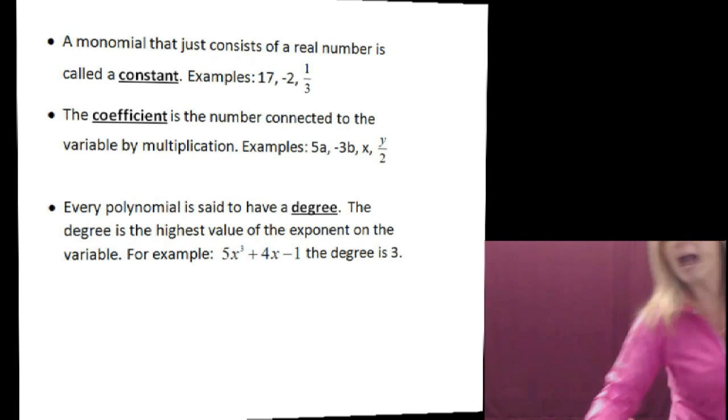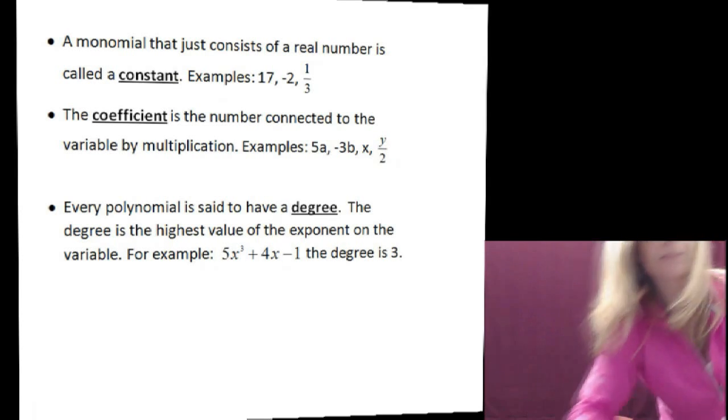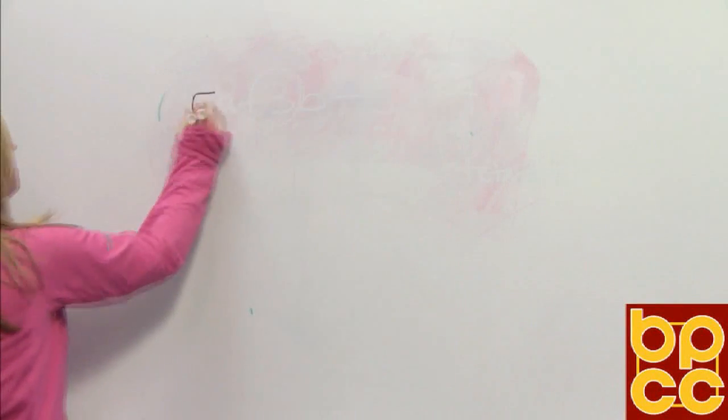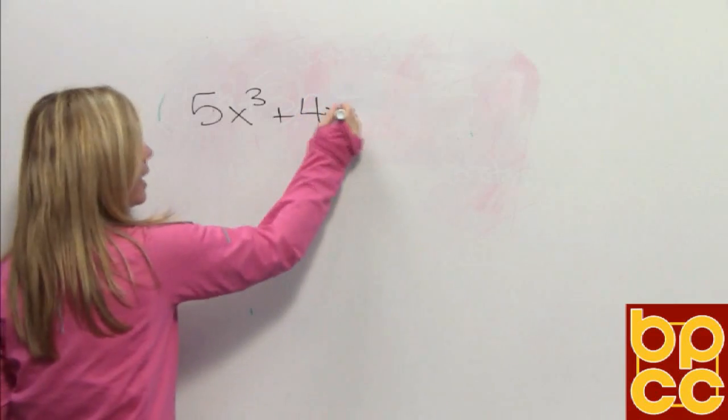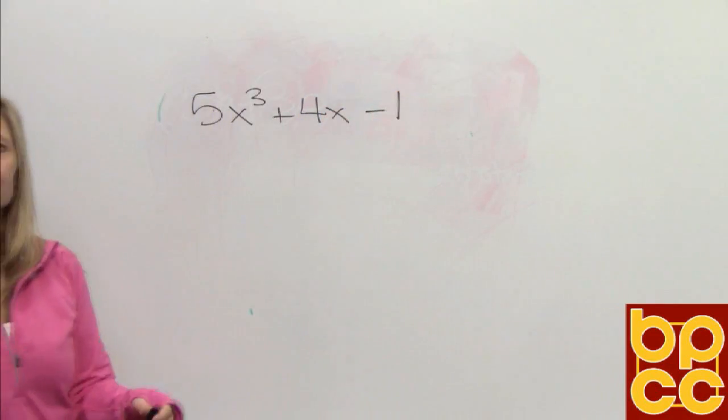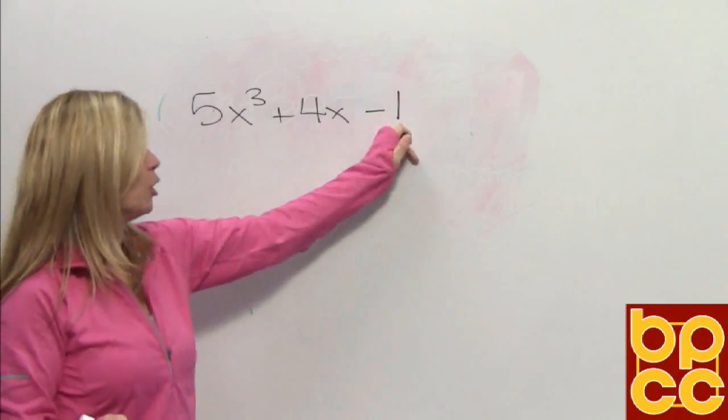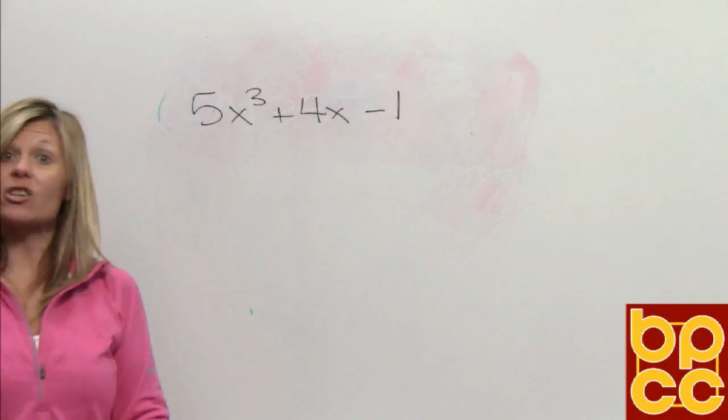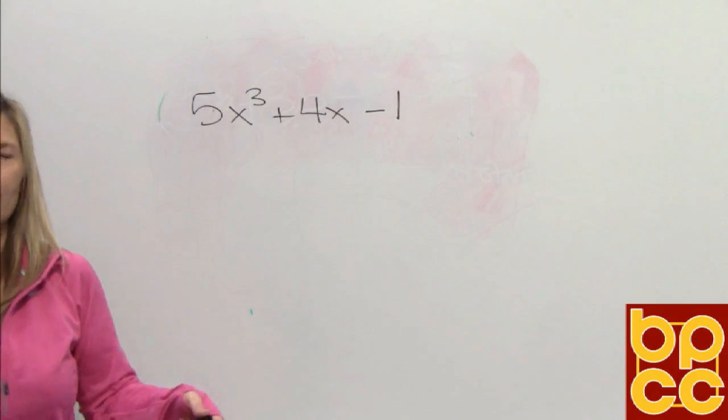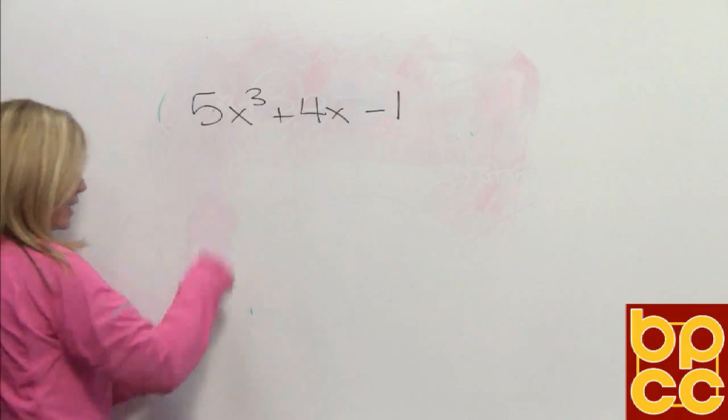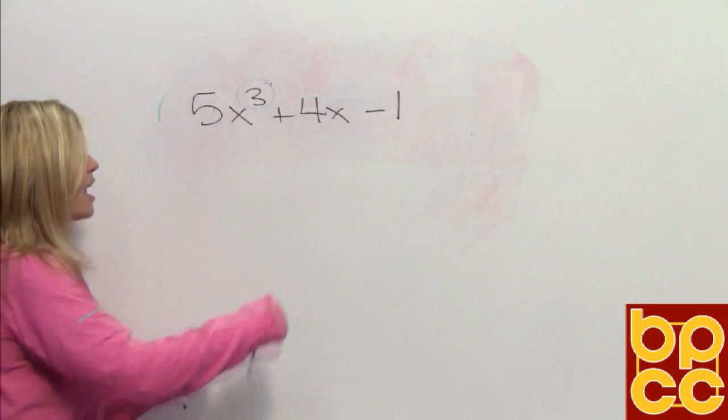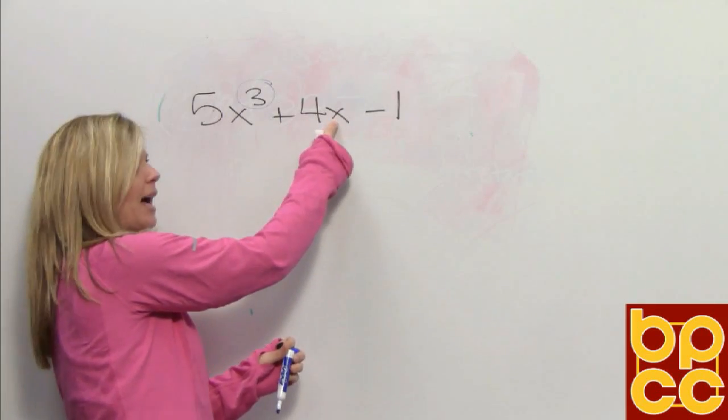We're going to look at this polynomial together. I have the polynomial 5x³ + 4x - 1. That polynomial has three monomials, three terms, so I could actually call this a trinomial. Every monomial in that trinomial has an exponent. The first one is obvious—the exponent is right here, it's a 3.